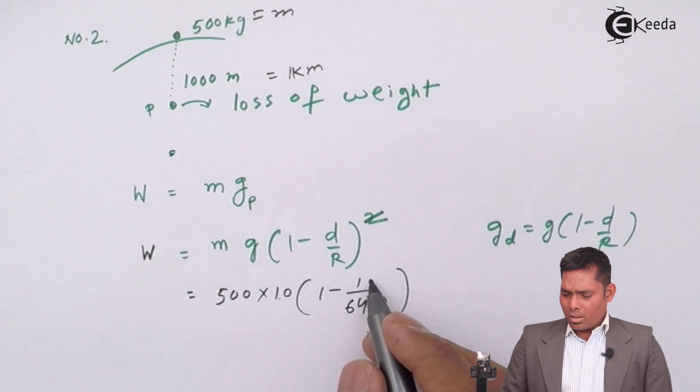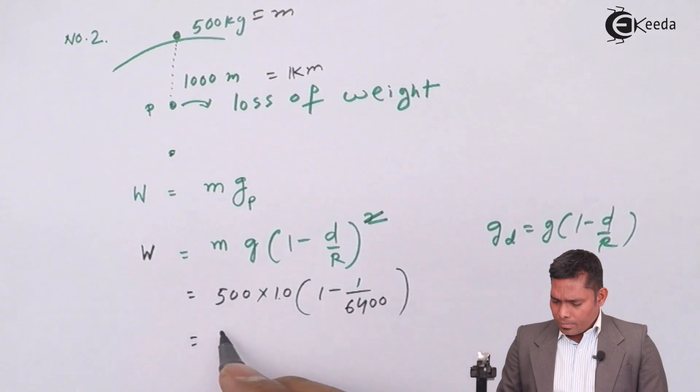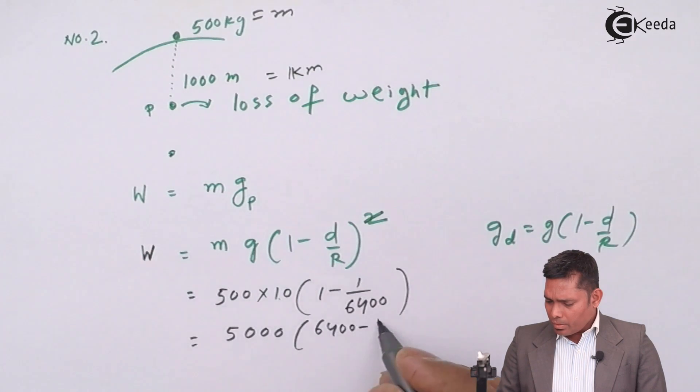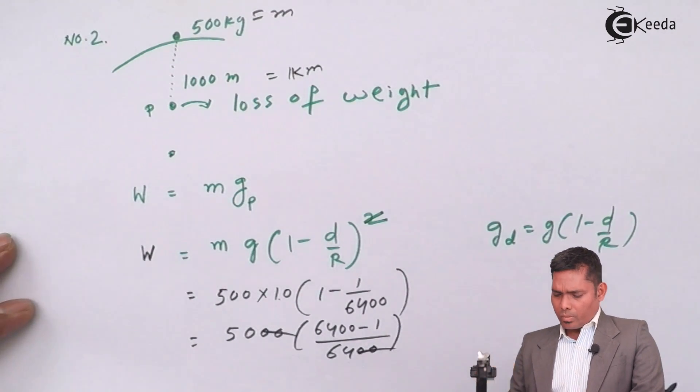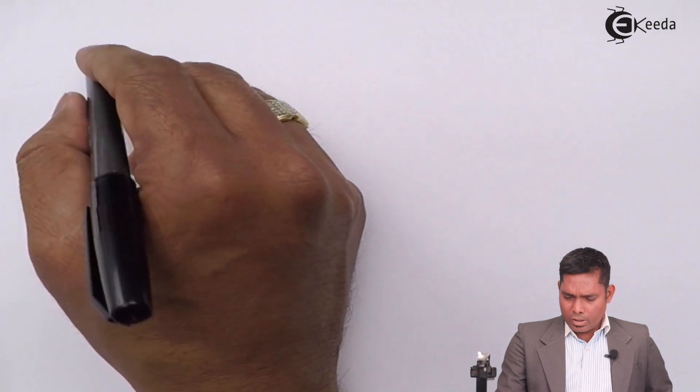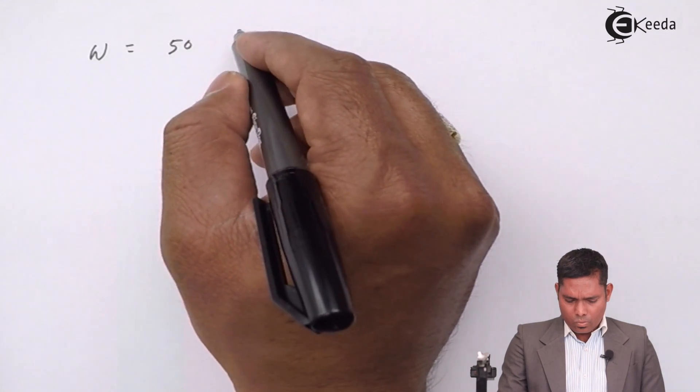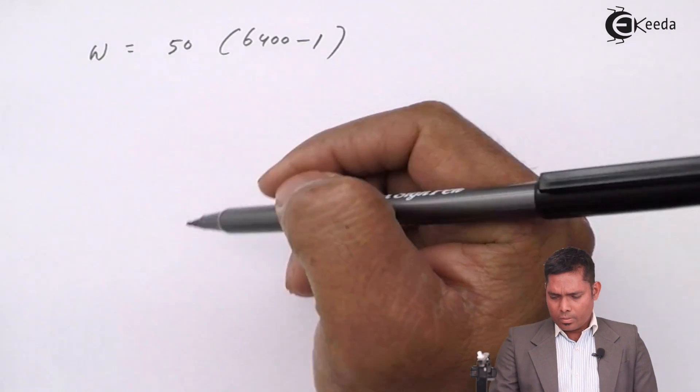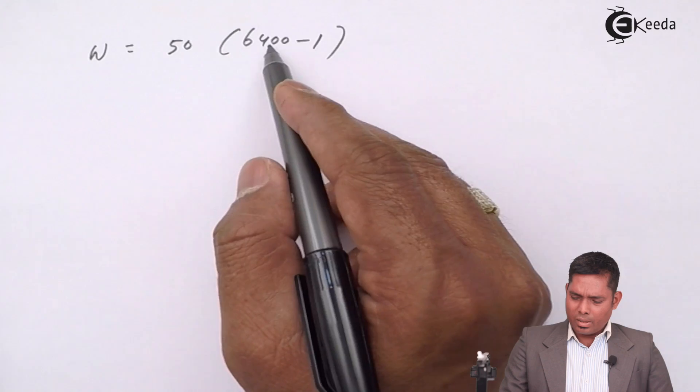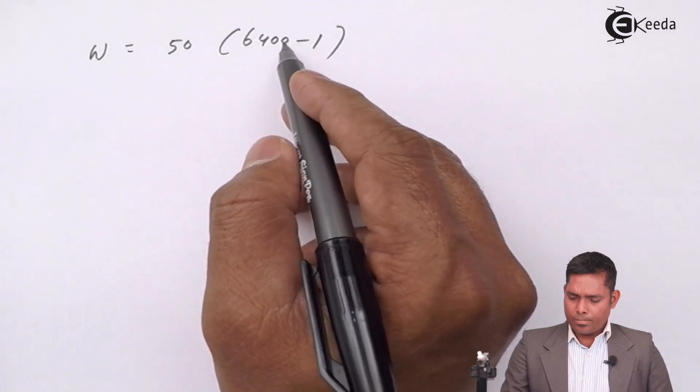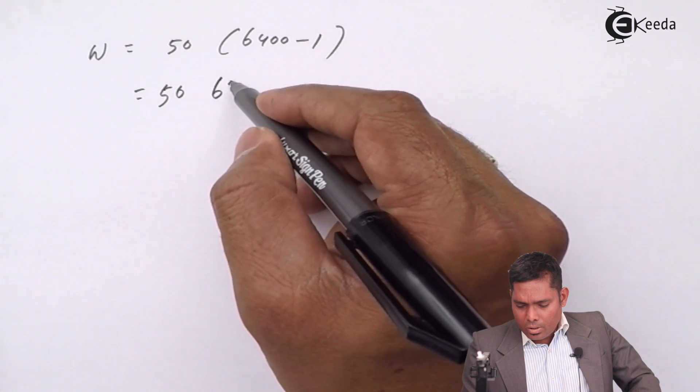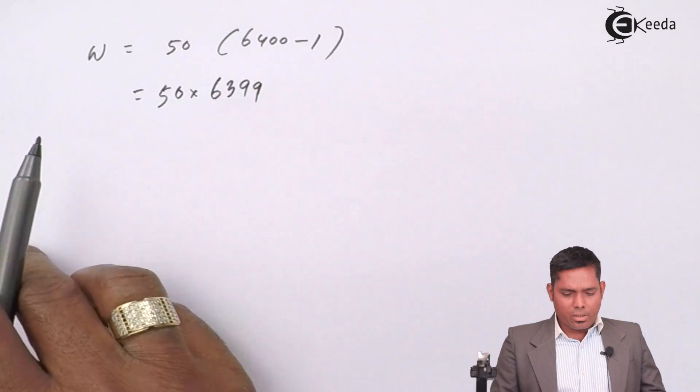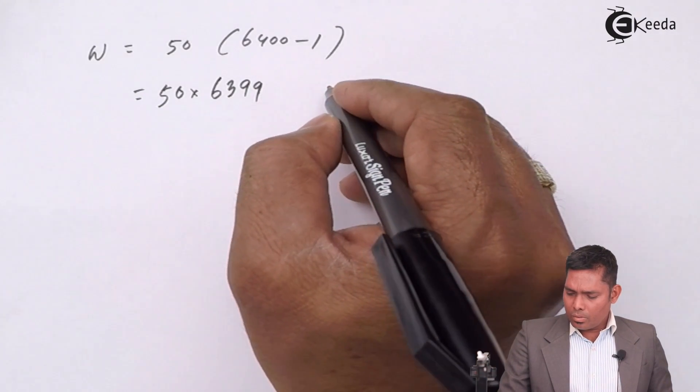This is 6400, so only one is 5000, and 6400 minus 1 divided by 6400. Two zeros cancel out. So weight is now 50 into 6400 minus 1. 6400 minus 1, it is approximately 6399 actually basically. 50 and 6399, multiplying that I will get a number. So for this equation number one.